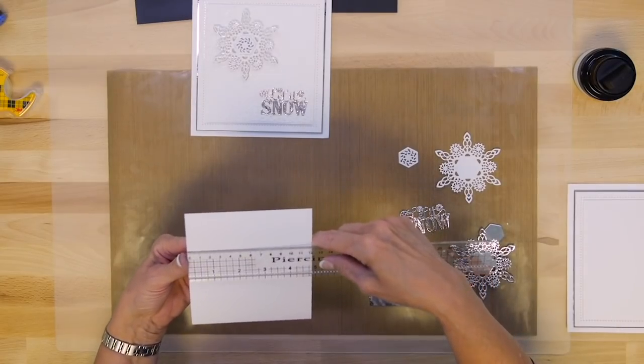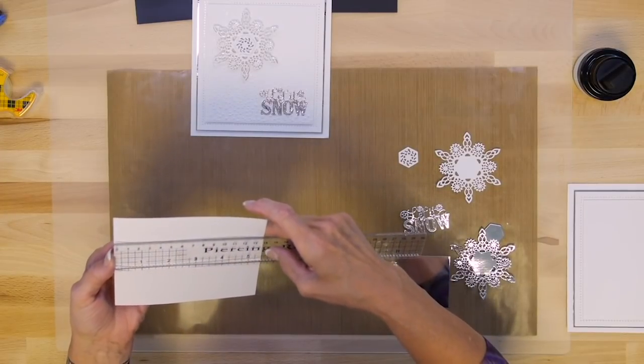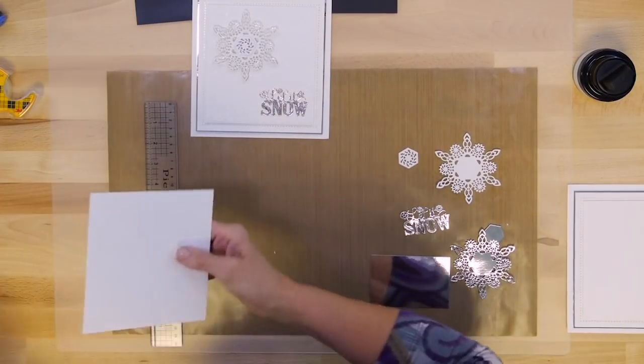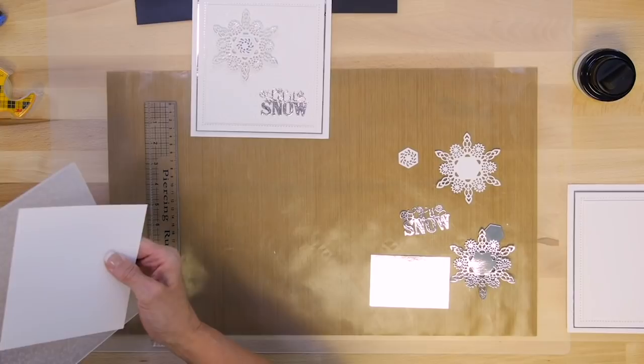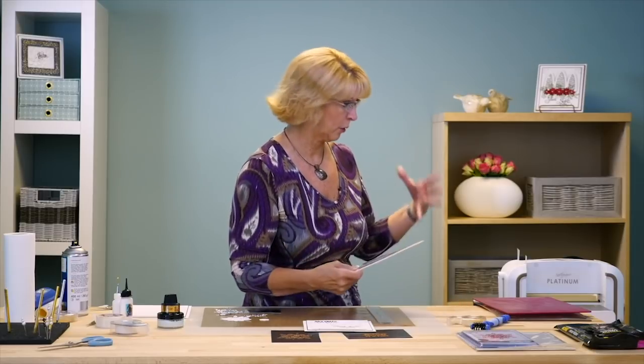So I've got a piece of coconut white card and I'll give you a quick measurement on this. It is 4 7⁄8 by 5 ½ inches. So I'm just going to pop that inside of our Falling Snow folder. It doesn't matter where you can turn it or whatever because it's a very random pattern.